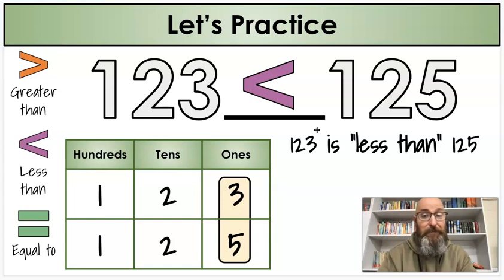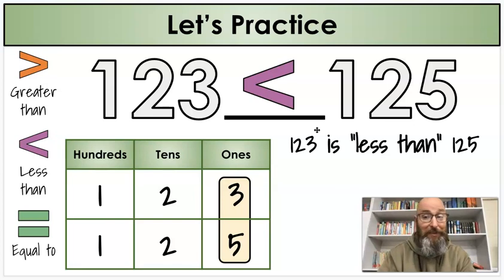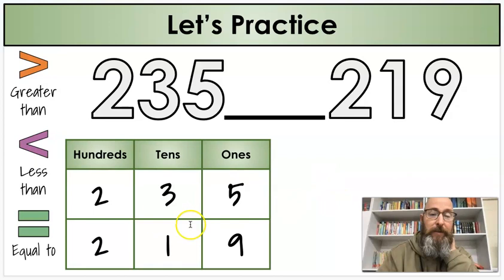How'd you do? Let's do another one together. And then we're going to practice a few with you telling me what to do. We have two more numbers again. Step one, of course, is to write the numbers on our chart. I have 235, 219.